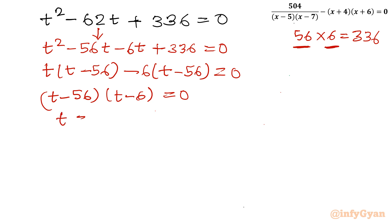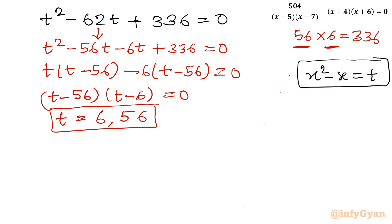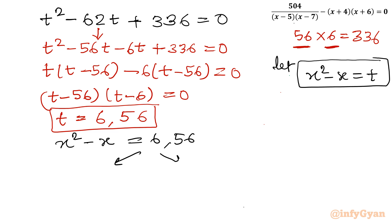So we have two solutions: t equal to 6, and t equal to 56. Now recall our substitution was x² minus x equal to t. Putting back the values: first equation x² minus x equal to 6, and second equation x² minus x equal to 56.